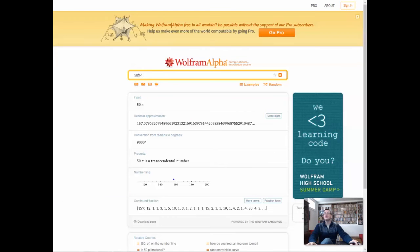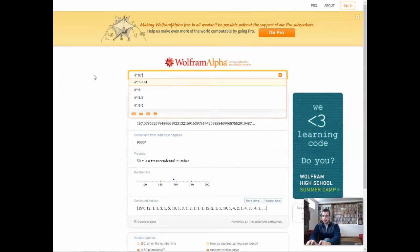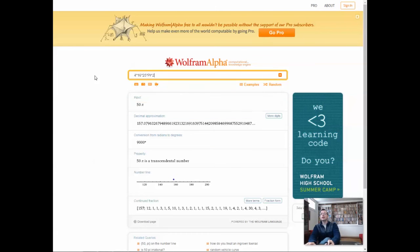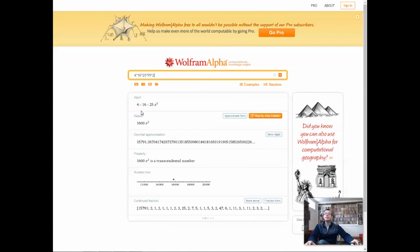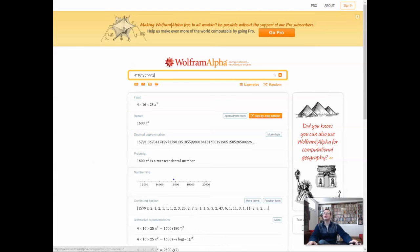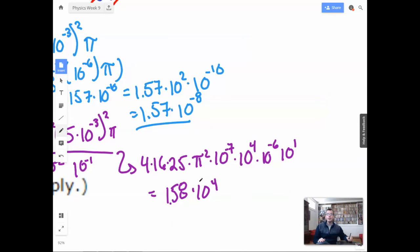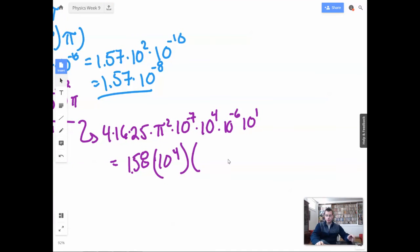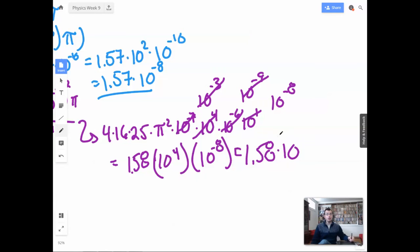So I'm going to do 4 times 16 times 25 times pi squared, which is, I'm going to just call that 158, 1.58 times 10 to the 4th. And then we're going to have 10 to the 4th, 10 to the negative 7th. So negative 7 plus 4 is 10 to the negative 3rd. These guys become 10 to the negative 9th. These guys become 10 to the negative 8th. So we have 10 to the negative 8th equals 1.58 times 10 to the negative 4th.